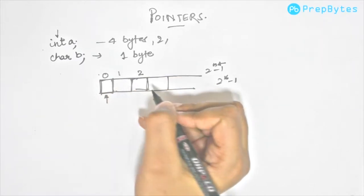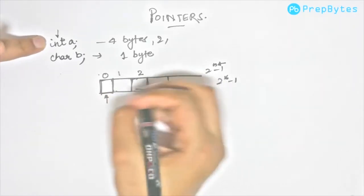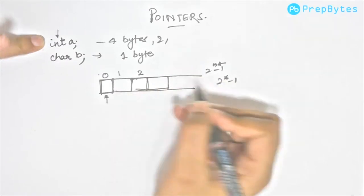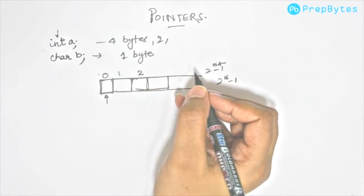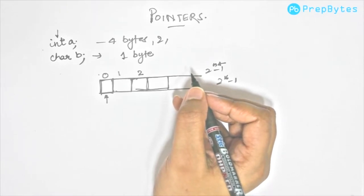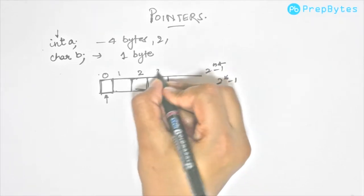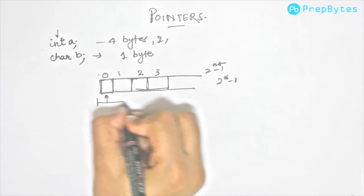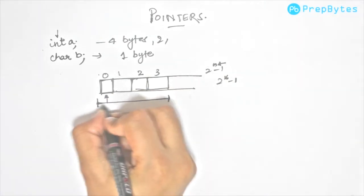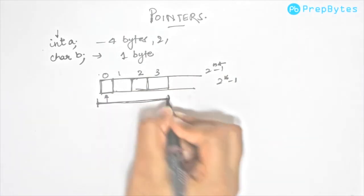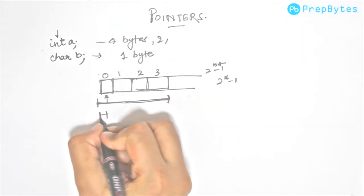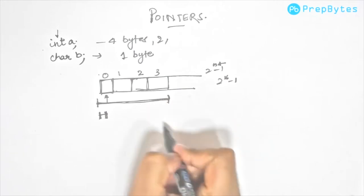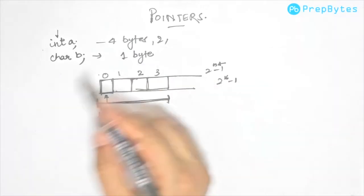Let's say we try to put this integer a in this memory. Since integer consumes 4 bytes, it will take these 4 bytes in the memory. In case we are putting a character, it will take just this particular byte in the memory. This is how variables are stored in the memory.